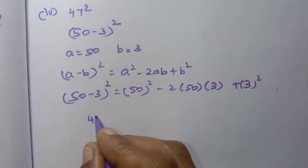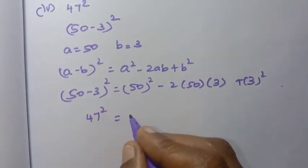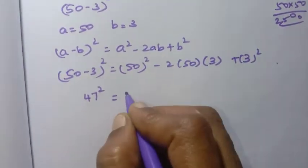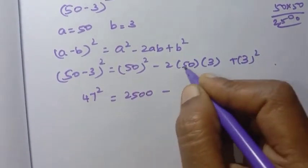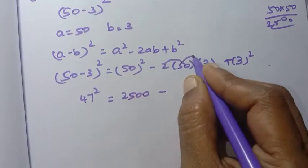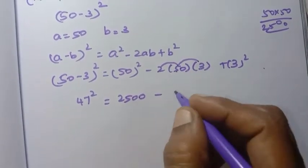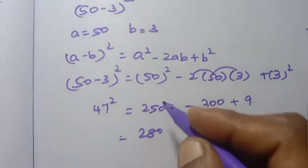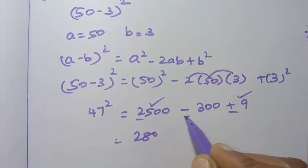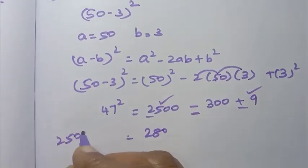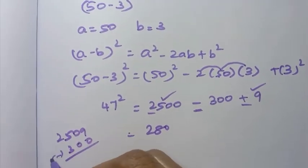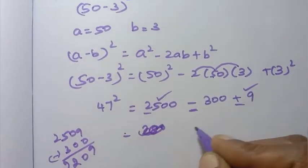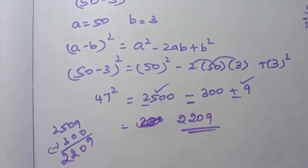So 50 minus 3 whole square, which is 47 square, equals 50 into 50 — which is 2,500 — minus 2 into 50 into 3, which is 300, plus 3 square which is 9. So 2,500 minus 300 plus 9 gives us 2,209. The answer is 2,209.